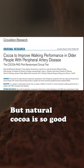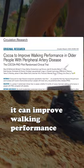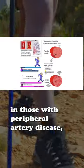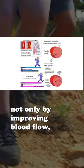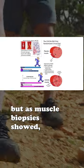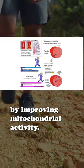But natural cocoa is so good, it can improve walking performance in those with peripheral artery disease, not only by improving blood flow, but as muscle biopsies showed, by improving mitochondrial activity.